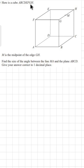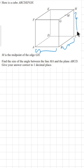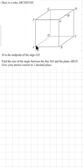Here is a cube A B C D E F G H. Each edge or every side of the cube is equal — if the length of AB is x, then length of BC will be x, length of CH will be x, every side will be x. M is the midpoint of the edge GH. Then find the size of the angle between the line MA and the plane ABCD.